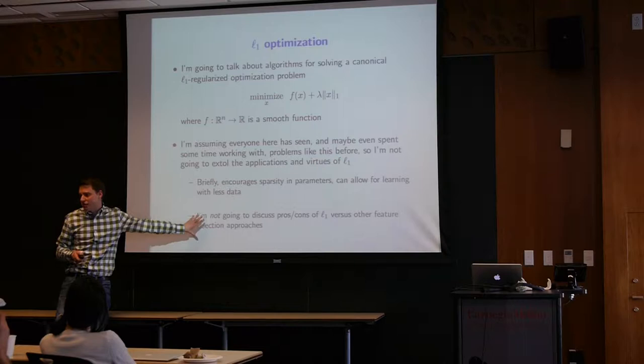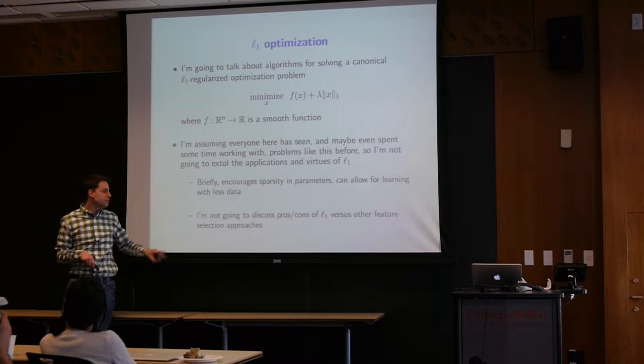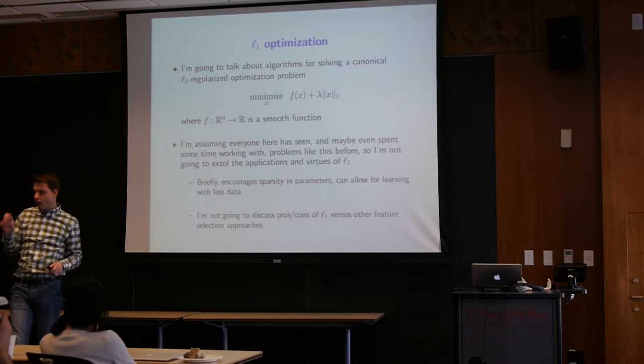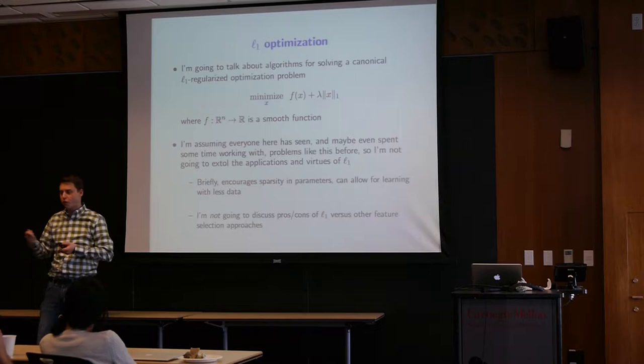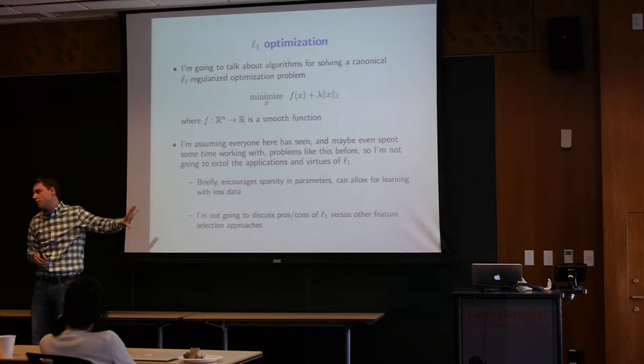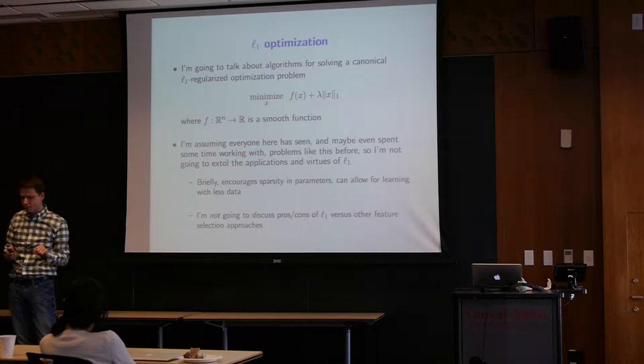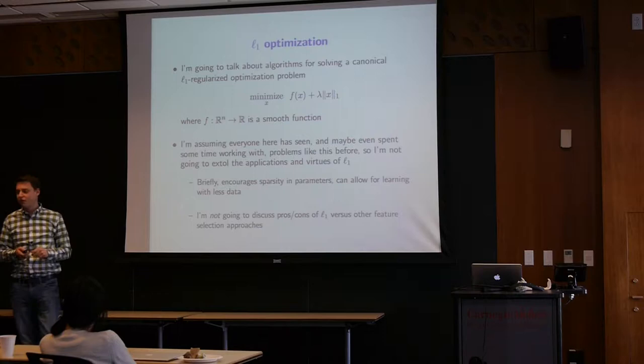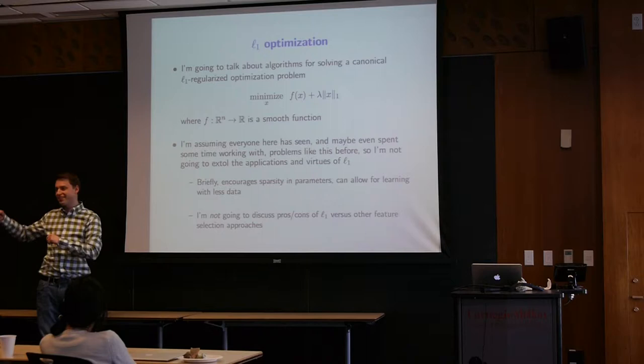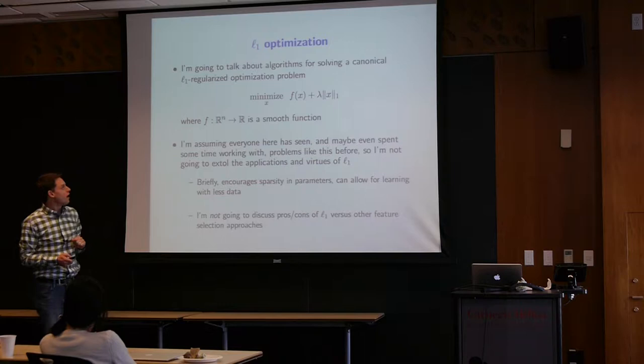I'm going to assume people have at least seen L1 optimization before and are interested in solving that problem. The standard examples are L1-regularized linear regression, logistic regression, and other algorithms of the form: minimize some function plus an L1 penalty. The point is it encourages sparse results for your x variable. I'm not going to talk about pros and cons of L1 methods versus other feature selection methods today — just about how to solve that problem efficiently.